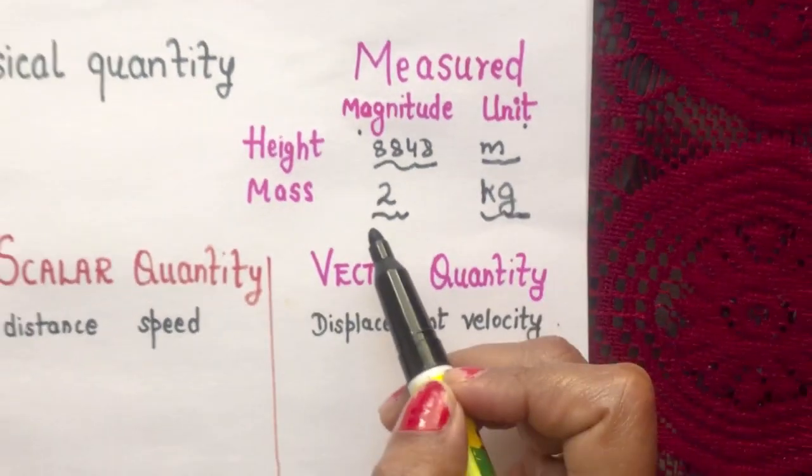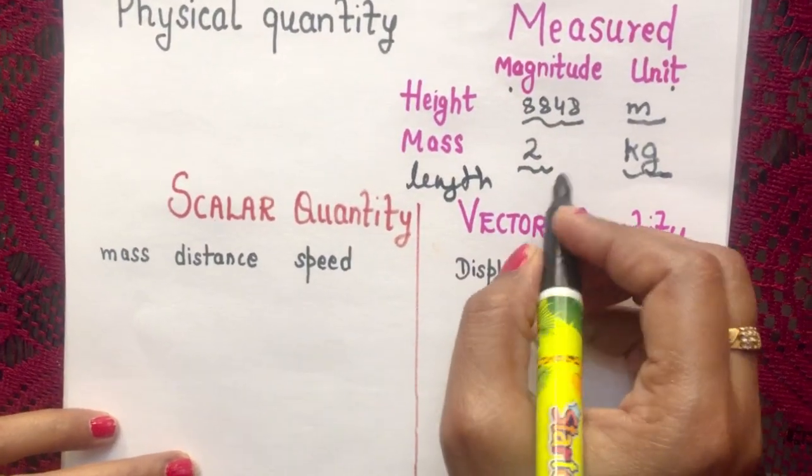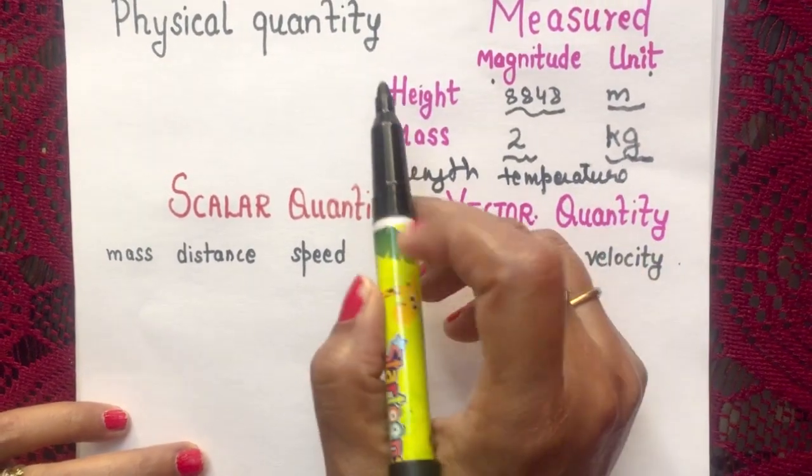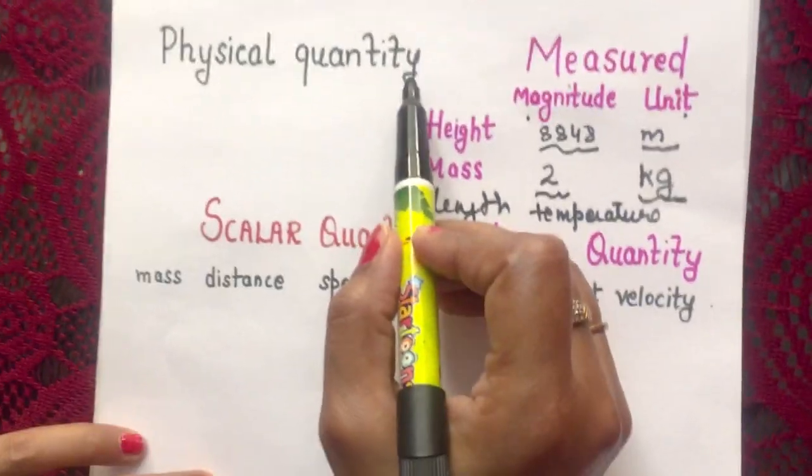Now suppose if you want to measure the length, then length also you can measure. You can measure the temperature. So all these quantities which we can measure are known as physical quantity.